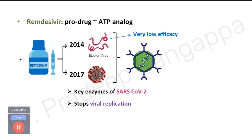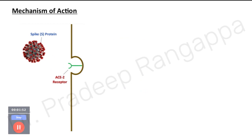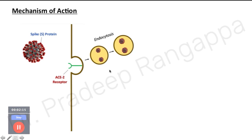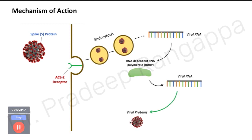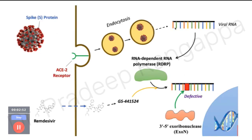Remdesivir predominantly impedes or stops viral replication in SARS-CoV-2. COVID-19 has a spike S protein which binds to the ACE2 receptor, and this undergoes endocytosis. This leads to viral replication through RNA-dependent RNA polymerase. Following endocytosis, RNA is released and multiple copies of viral RNA are created, which get incorporated to form new viruses that exit the cell.